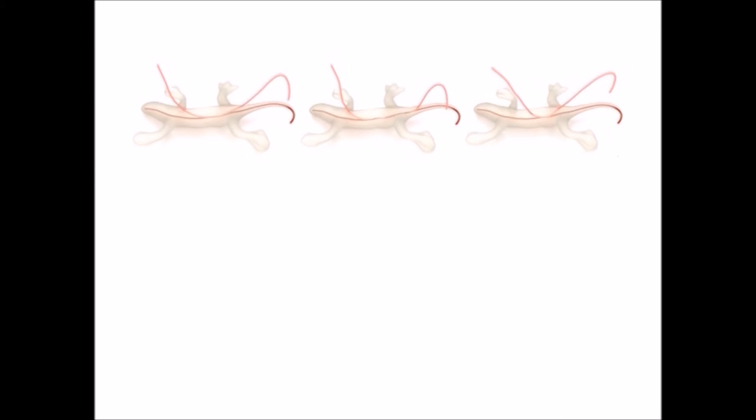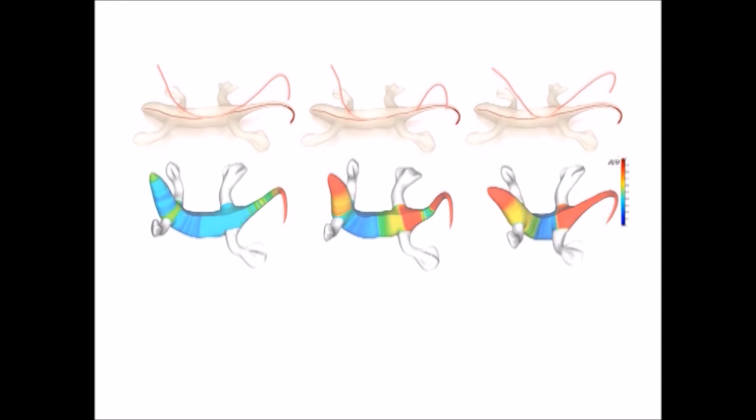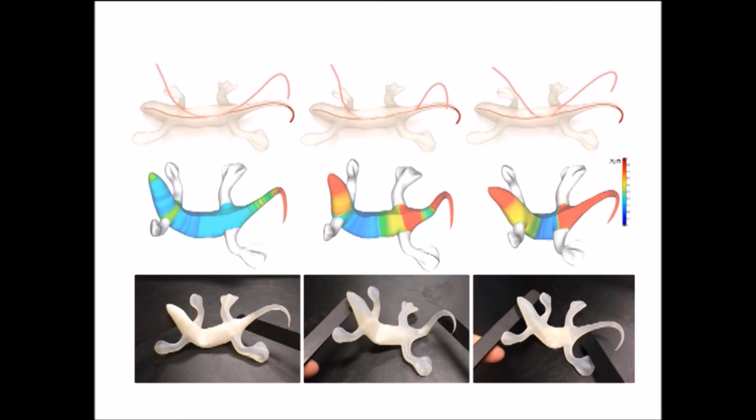The effectiveness is further validated on freeform models. In the top row, we designed three bending behaviors of a lizard. In the middle row, distributions of shell thicknesses are computed with blue as the minimum and red as the maximum in the color map. In the bottom row, experiment results have shown that the bending behaviors of the fabricated models align with our desired behaviors.